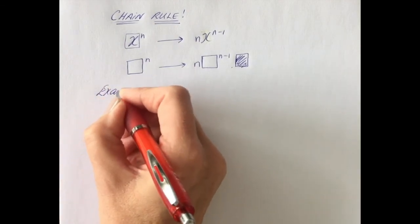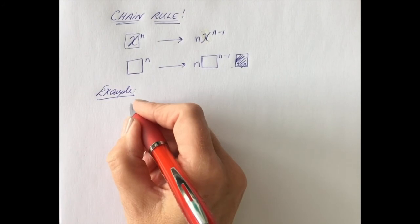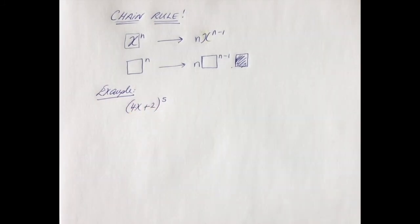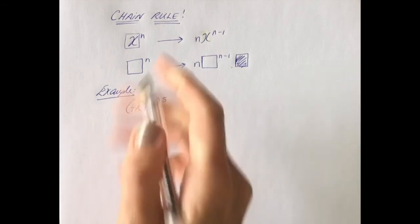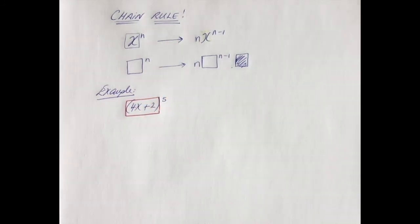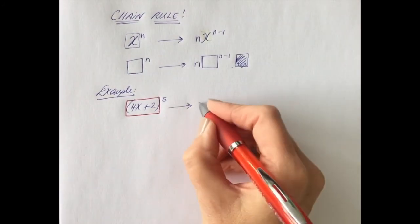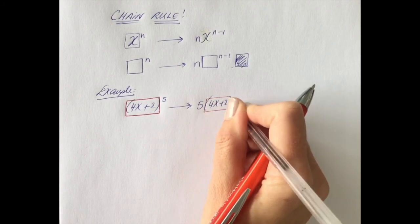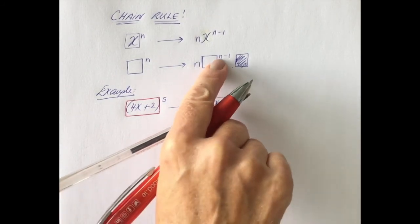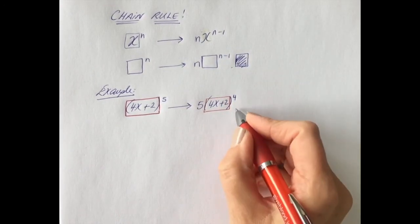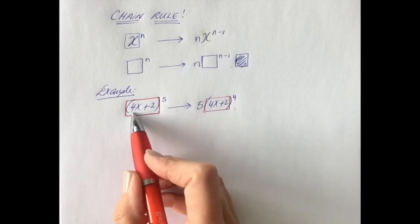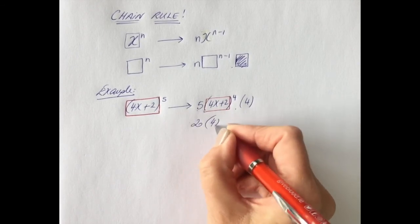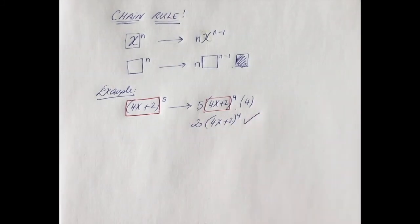Let's take an example: say you have (4x + 2) all to the power of 5. You've got something more complicated than just an X being raised to a 5. Differentiating, you bring down the power of 5, that stays, take 1 away from the power to get 4, then multiply by the differential of (4x + 2), which is 4. So 5 times 4 gives 20, and your answer is 20(4x + 2)^4.